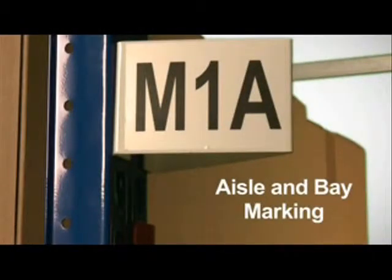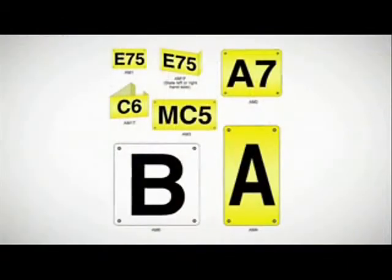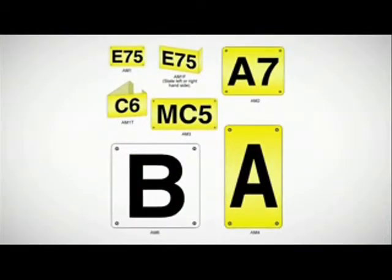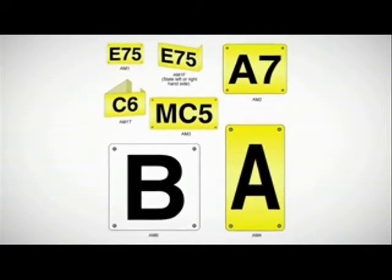Our ranges of highly visible aisle signs identify individual aisles, enabling quick and accurate picking and stock placement. They come in a range of shapes and sizes, with a white or yellow background colour and bold black digits.